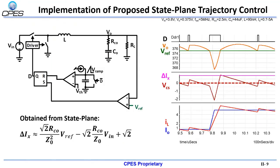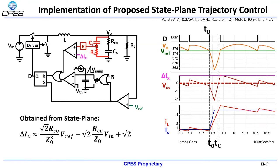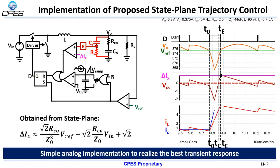Implementation of the proposed state plane trajectory control is shown here, where on top of the conventional v-square constant on-time control, a detector is used to determine when a load step-up transient occurs. Then, the capacitor information will be used to compare with the delta IX, which is obtained from the state plane as the current limiting wall, to generate TE and terminate an extended on-time period. Afterwards, v-square constant on-time control takes over and the converter goes back into steady state, realizing a simple analog implementation to achieve the best transient response possible.